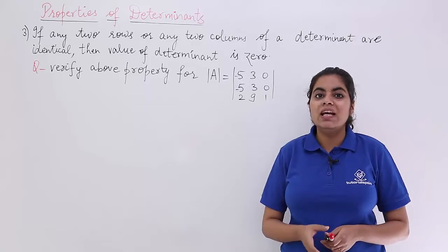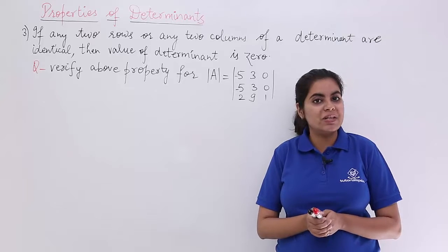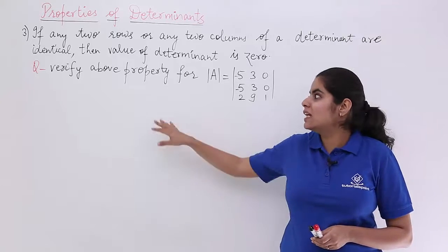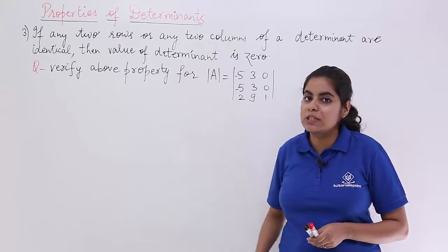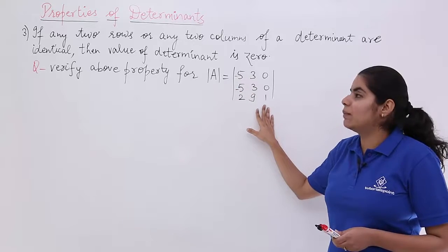In this video, let's see a numerical problem which is based on the previous property that we studied, which is property number 3. The problem says verify above property, above property means property number 3 for determinant A is equal to something like this.